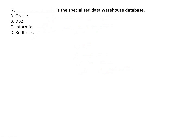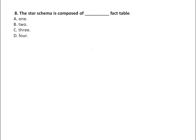A specialized data warehouse database is known as a data mart. The star schema is composed of one fact table and many dimension tables — one for each dimension such as dimension one, dimension two, and dimension three.